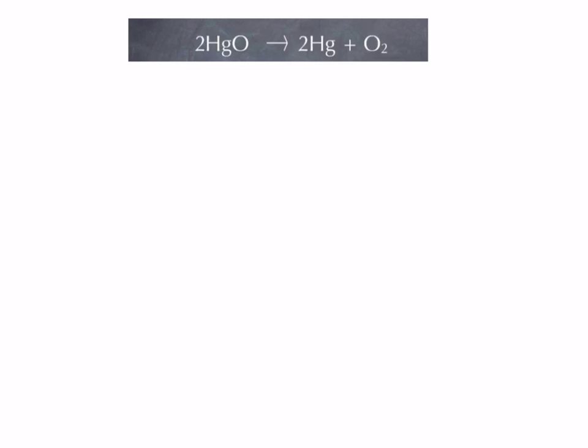And like many AP chemistry questions, the equation is actually already balanced. So we have mole ratio of 2 moles of mercury oxide to yield 2 moles of mercury and 1 mole of oxygen.